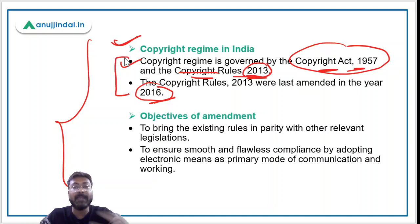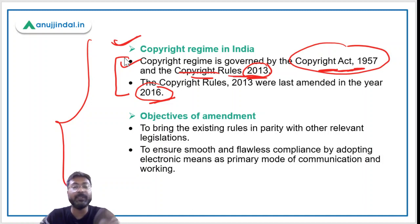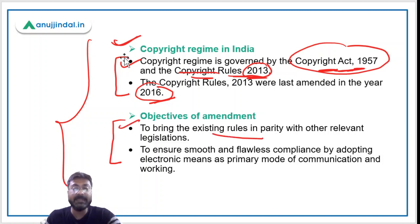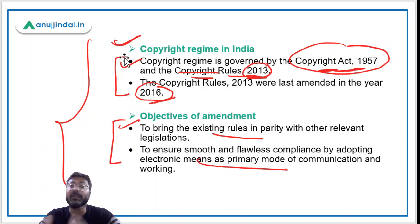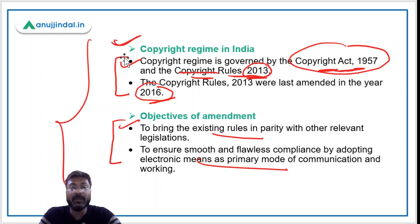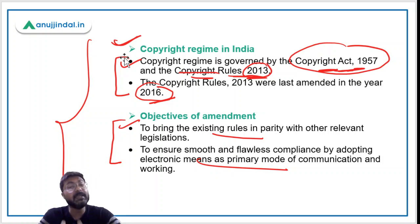Remember these two: Copyright Act 1957 and Copyright Rules 2013. If a direct question is asked about which acts govern the copyright regime, these are the correct answers. The basic objectives of the recent amendment are: to bring the existing rules in parity with other relevant legislations, and to ensure smooth and flawless compliance by adopting electronic means as the primary mode of communication.